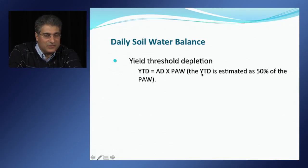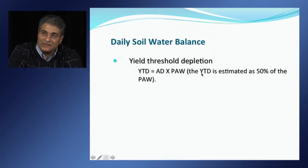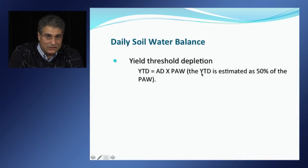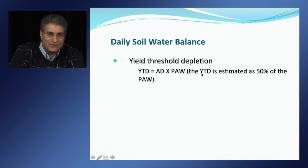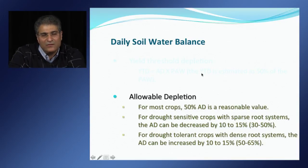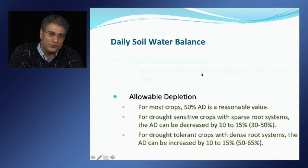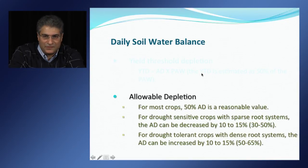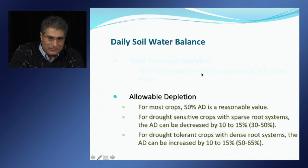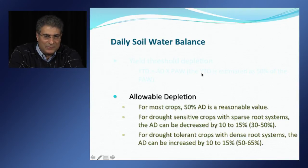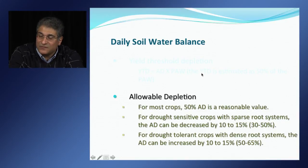In this program, soil water balance is calculated on a daily basis. Yield threshold depletion is used to identify when irrigation events are needed during the growing season; it is the maximum soil water depletion allowed and is determined by multiplying allowable depletion by plant available water. For most crops, yield threshold depletion is estimated as 50% of plant available water. For drought-sensitive crops, allowable depletion can be decreased by about 10–15%. For drought-tolerant crops with dense root systems, allowable depletion can be between 50–65%.